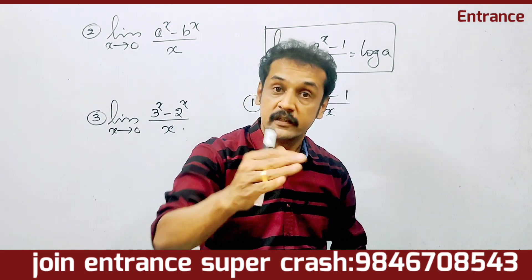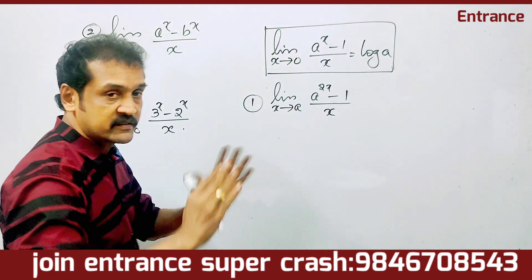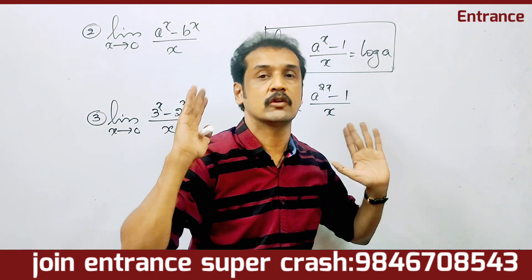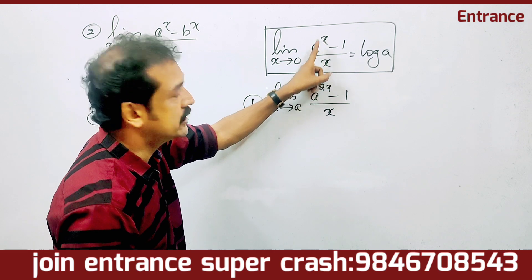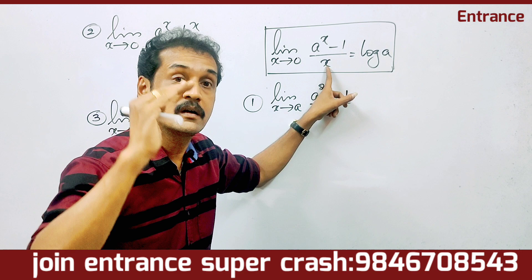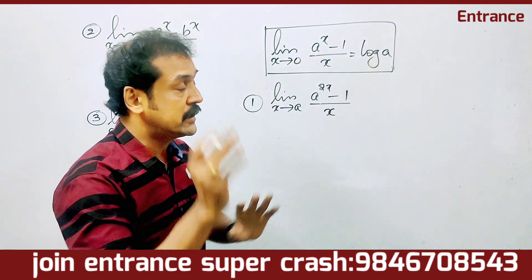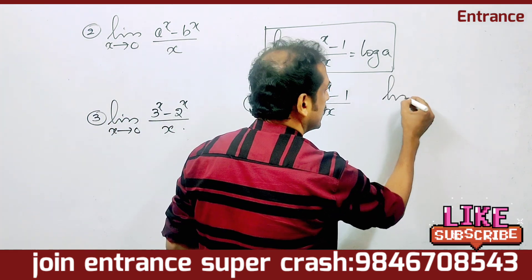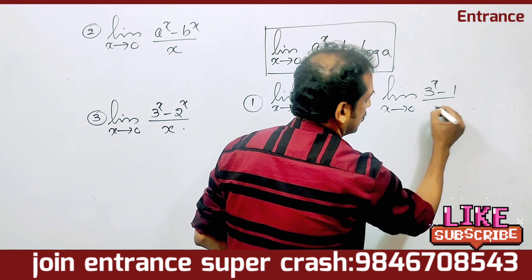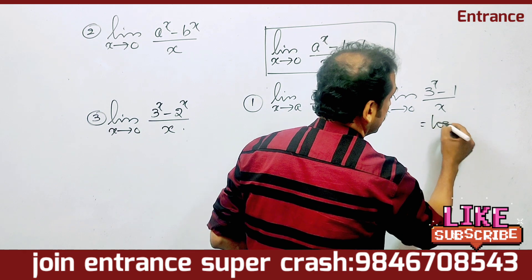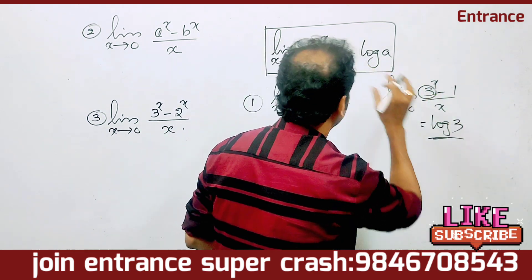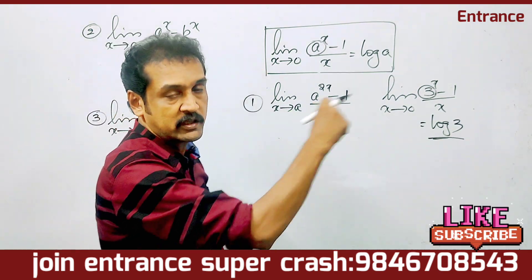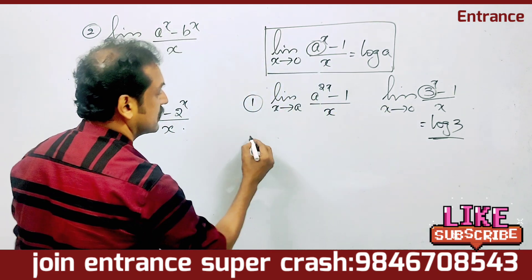Second result. Limit x tends to 0 of (a raise to x minus 1) by x. This is a standard result. The answer can be written as log A, where A is any constant. So limit x tends to 0 of (a raise to x minus 1) by x equals log A.